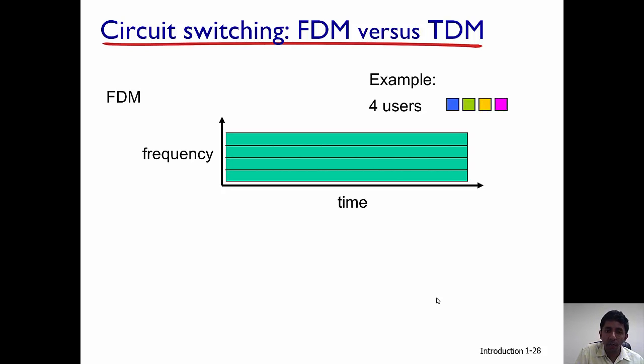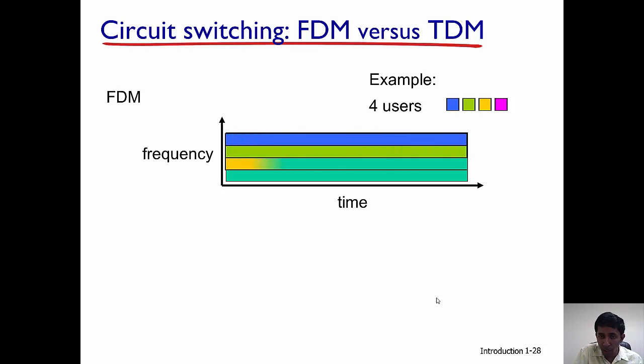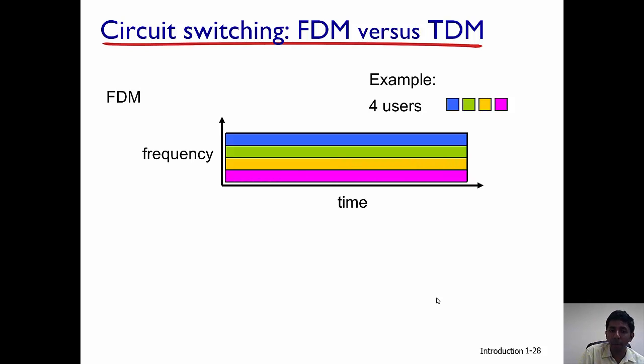Here the entire frequency is divided into four bands and each band is allocated to a different user. The top band is allocated to the blue user while the pink user gets the bottom band.